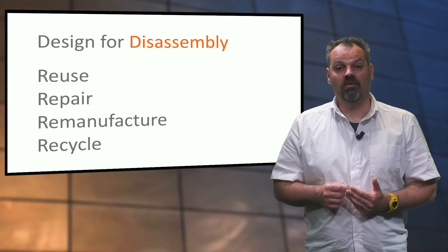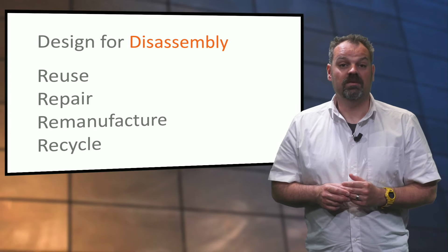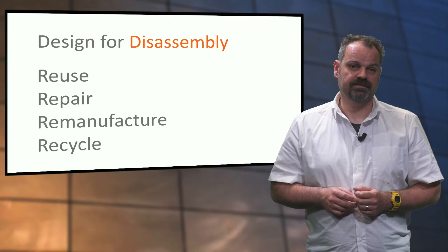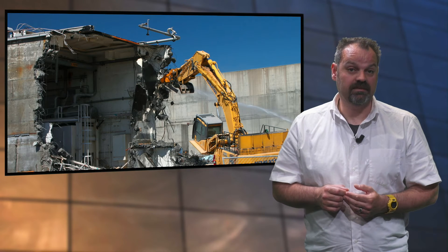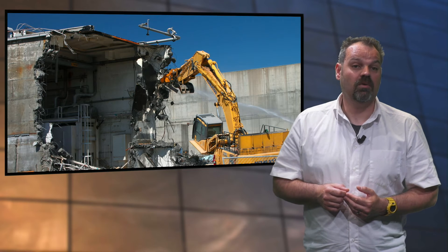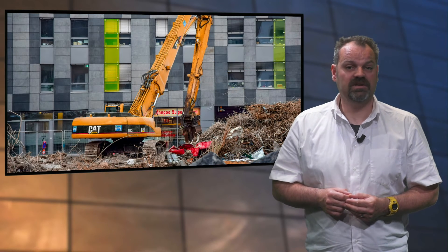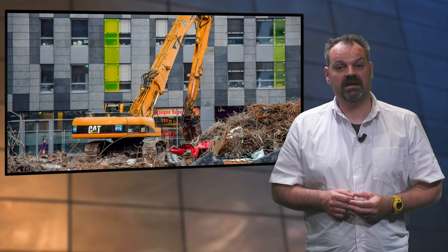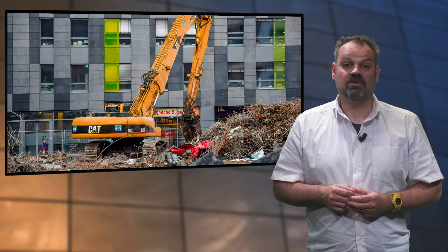Many consumer goods are already designed for disassembly. In comparison to consumer goods, the building sector looks very different and the end of use is not taken into account. Do you know how to disassemble or demolish a building? You need big machines like excavators, cranes with wrecking balls and other heavy machinery. The pure size of a building makes it more difficult to take an entire building apart and sort the materials out in order to bring them back into the circle. A big difference in comparison to consumer goods is also the lifespan.